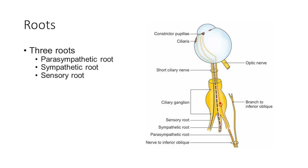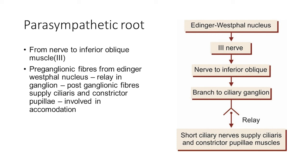The ciliary ganglion is one of the peripheral parasympathetic ganglia and is present in the orbit. Just like any other parasympathetic ganglion, it has three roots: parasympathetic, sympathetic, and sensory. The parasympathetic root arises from the branch to the inferior oblique muscle given off by the oculomotor nerve. The parasympathetic pathway starts at the Edinger-Westphal nucleus in the midbrain at the level of the superior colliculus, passes through the third nerve (oculomotor nerve) to its inferior oblique branch, and through the inferior oblique branch reaches the ciliary ganglion, where it relays.